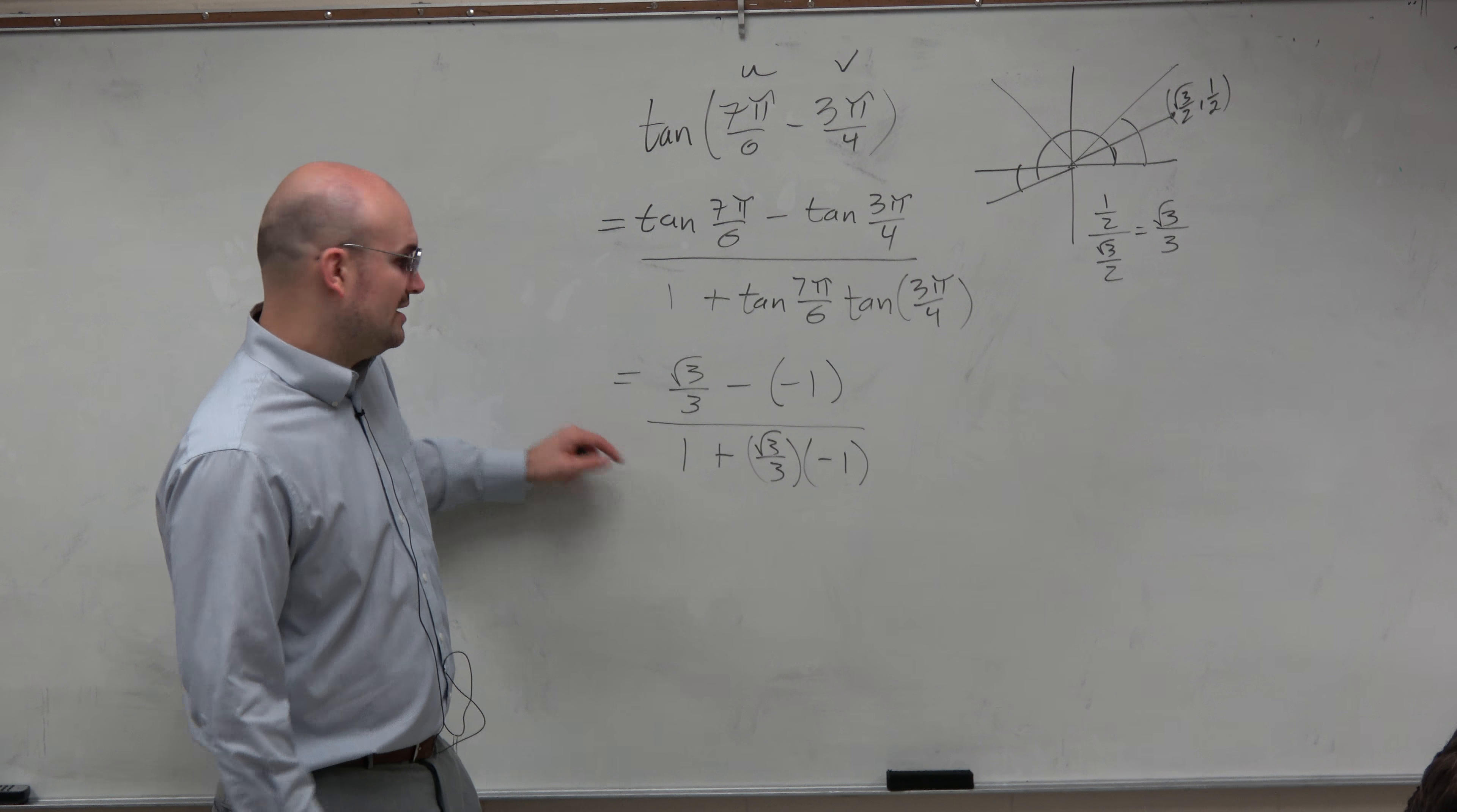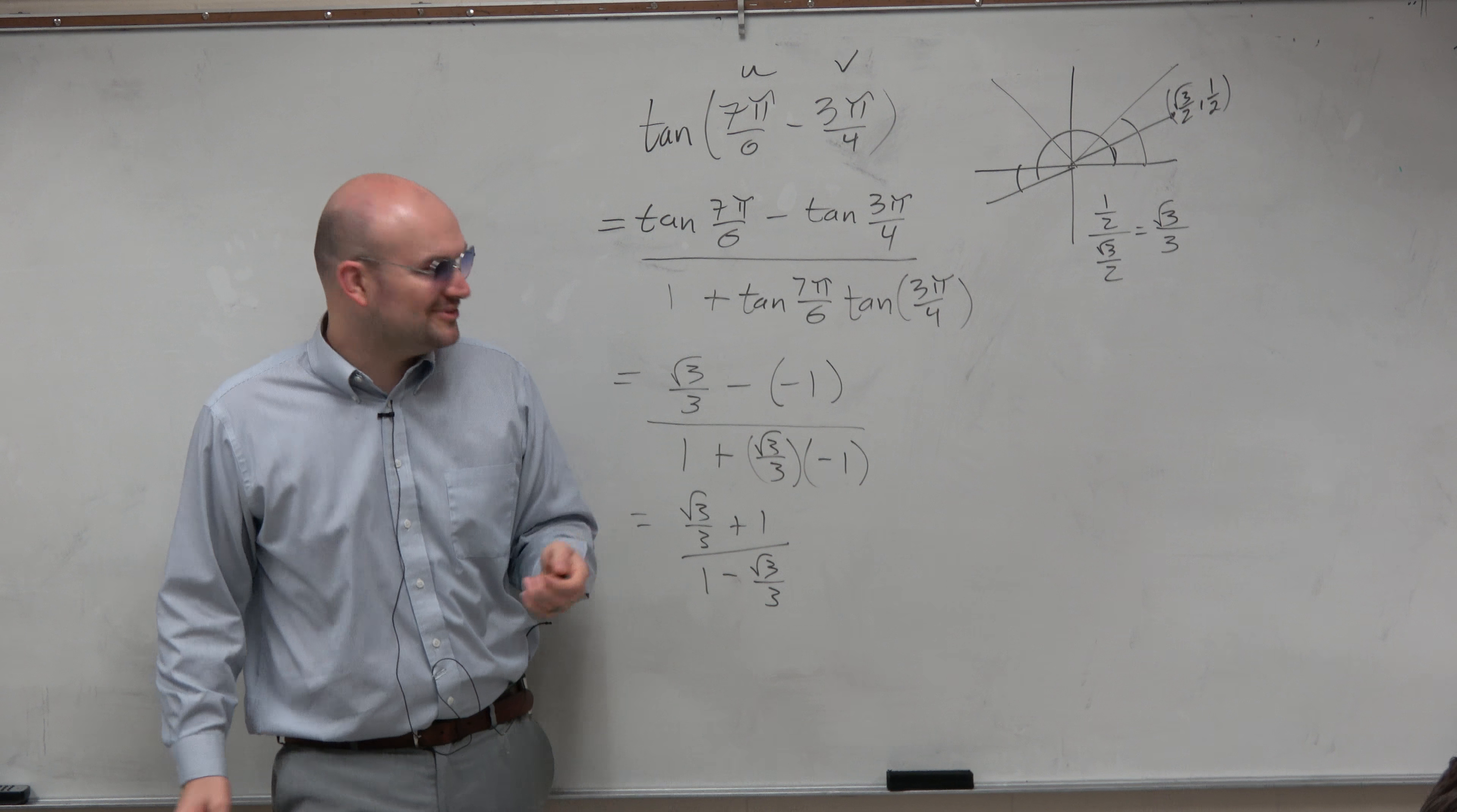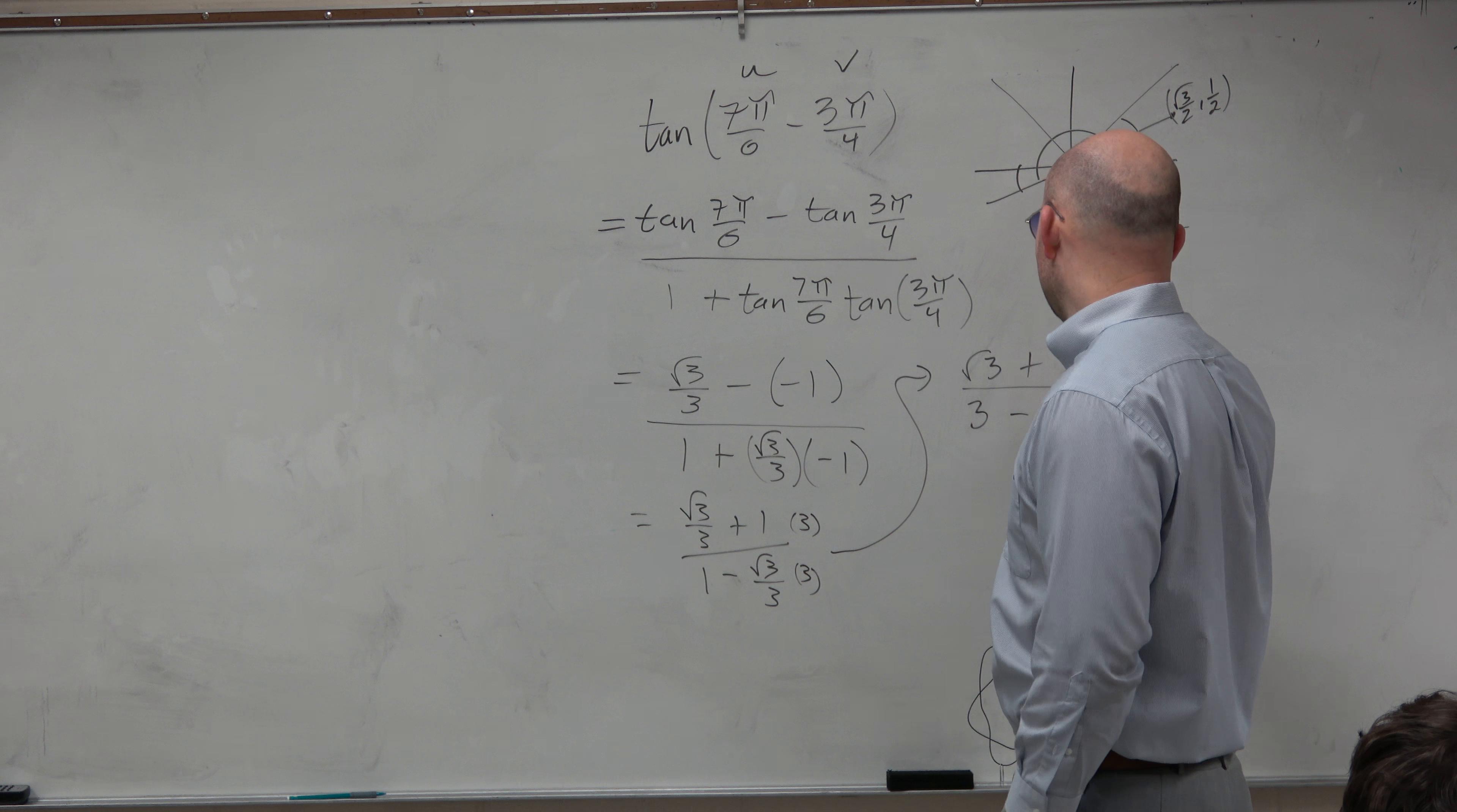And now when we go ahead and simplify this, we have square root of 3 over 3 plus 1 all over 1 minus square root of 3 over 3. And oh my god, look, that's just like what we did for our warmup, right? I didn't even plan that for you guys. But anyways, you hopefully know we can do this a little bit quicker here. I can multiply it by 3 on the top and the bottom. So since we already did this on our warmup, I'm not going to explain it as much. So we have square root of 3 plus 3 all over 3 minus the square root of 3.